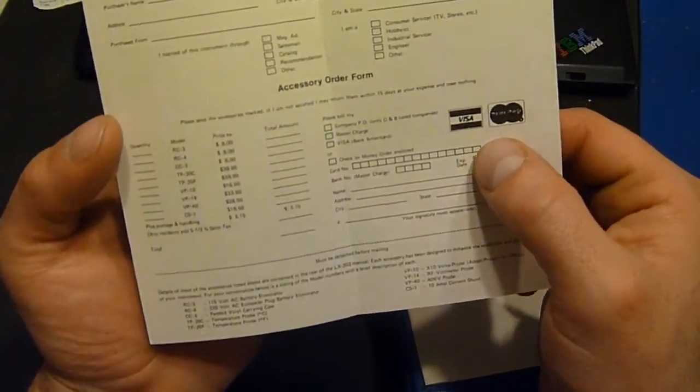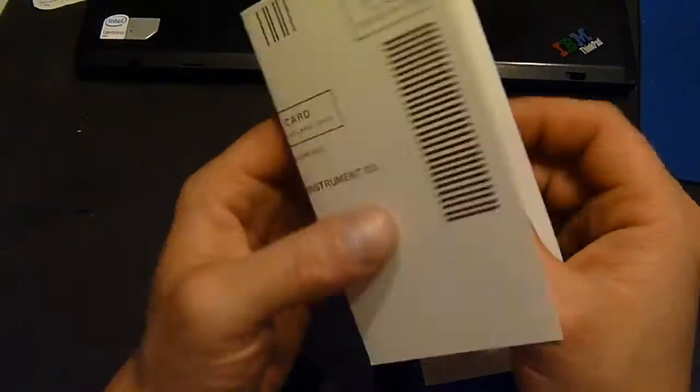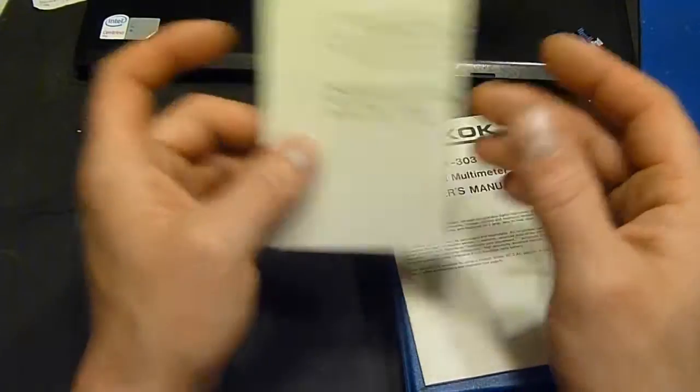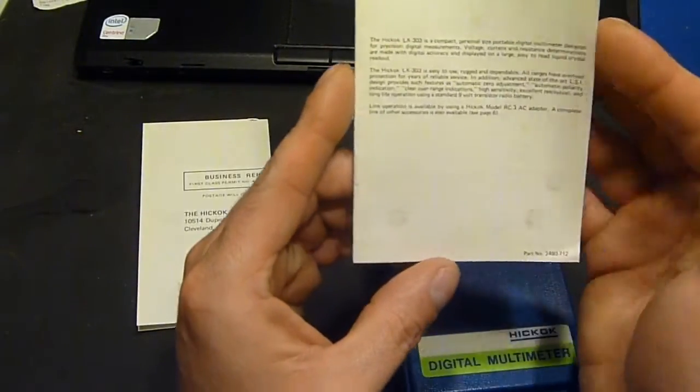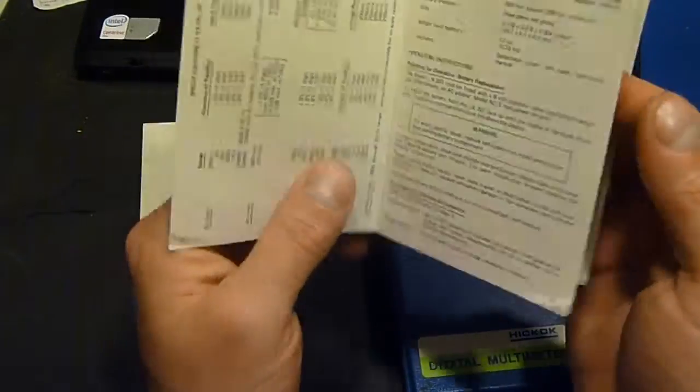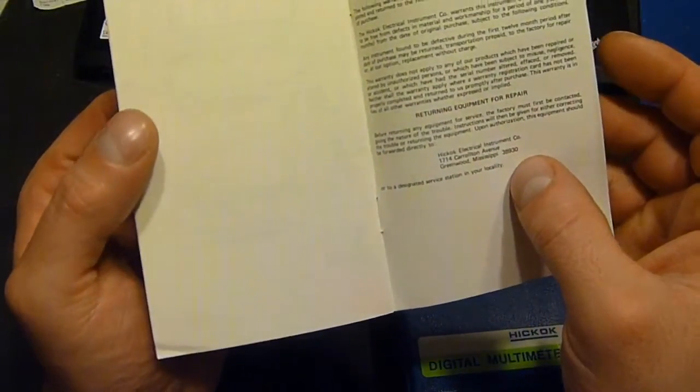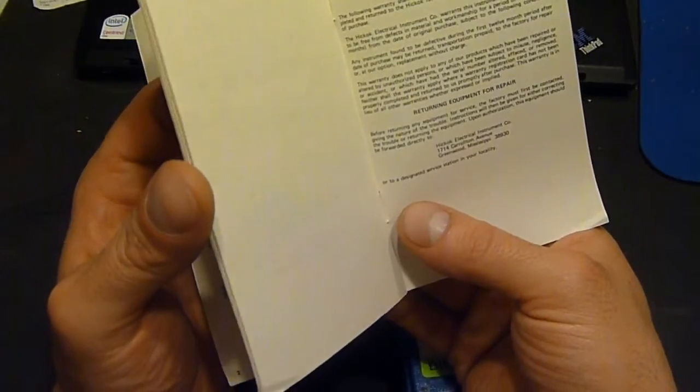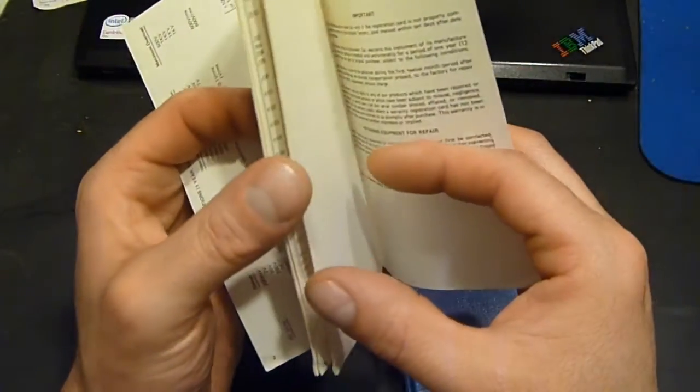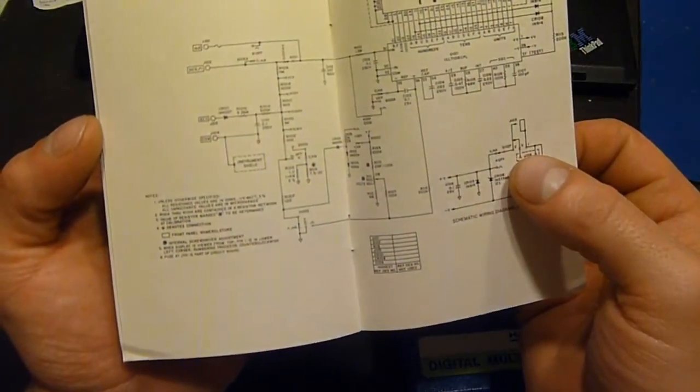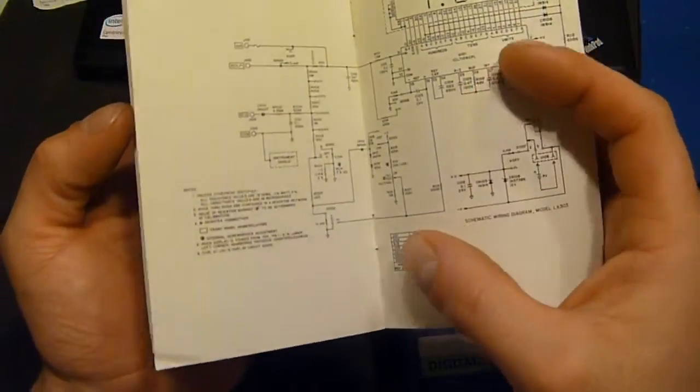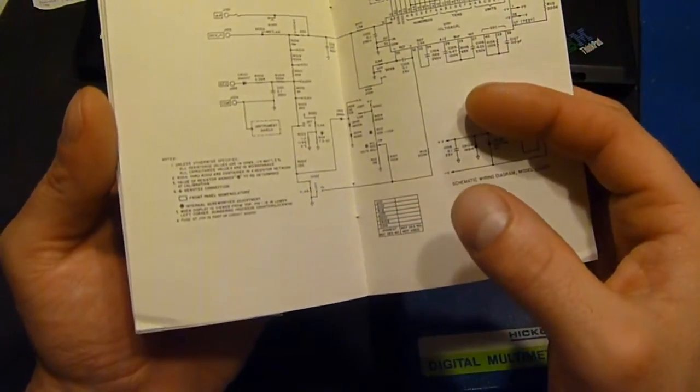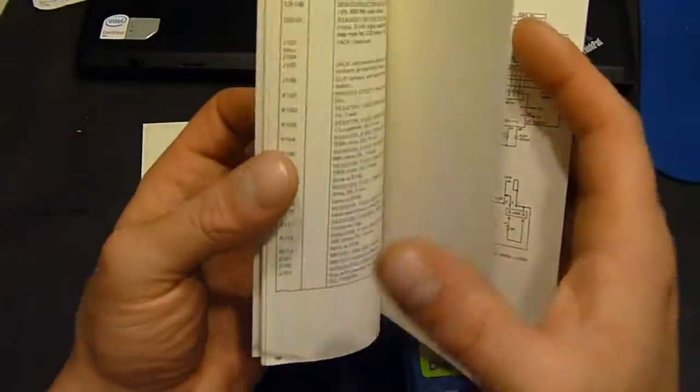It's got Visa and MasterCard on it. It's got a current zip code. I believe this is from the late 70's or early 80's. It's nice. It's got a schematic in here. So whatever do you buy today that comes with a schematic.